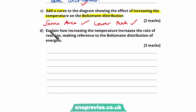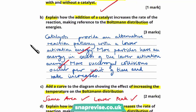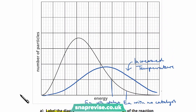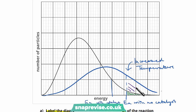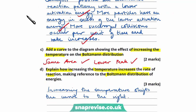Moving on to part D, we're asked to explain how increasing the temperature increases the rate of reaction, again making reference to the Boltzmann distribution of energies. Increasing the temperature shifts the curve to the right, as shown above. With a lower temperature, a smaller number of particles have energy in excess of the activation energy, but with an increased temperature, more particles have an energy in excess of the activation energy, even without a catalyst. We can see this greater shaded area on the graph.